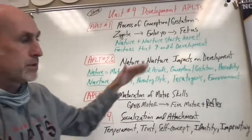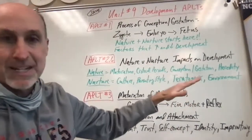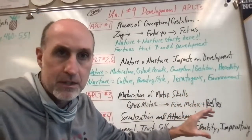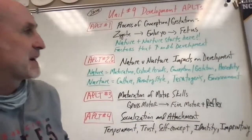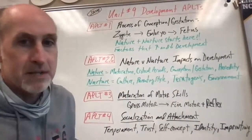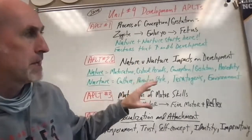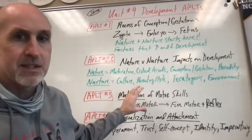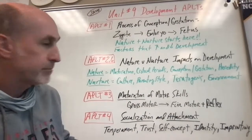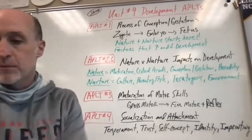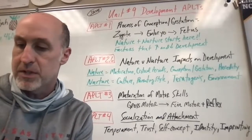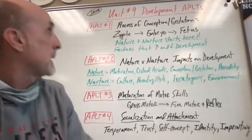I've got the learning targets in red and then the information in black and green that you need to focus on. We're going to go through 1 through 8 in order. AP Learning Target Number 1 says: explain the process of conception and gestation, including factors that influence successful prenatal development.